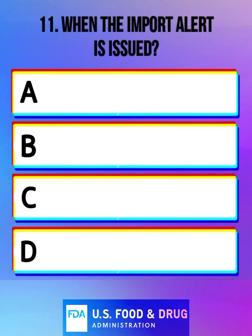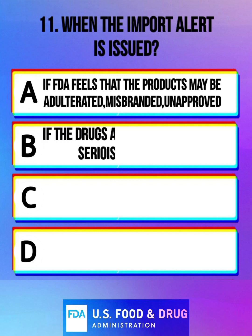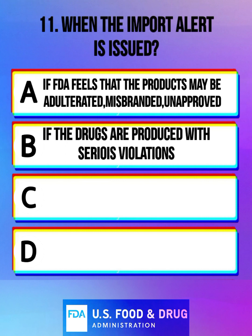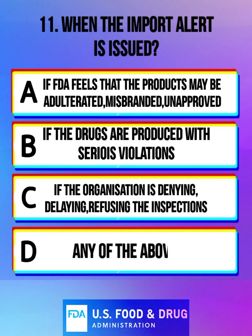When is the import alert issued? Option A: if FDA feels that the products may be adulterated, misbranded, or unapproved. Option B: if the drugs are produced with serious violations. Option C: if the organization is denying, delaying, or refusing the inspections. Option D: any of the above.